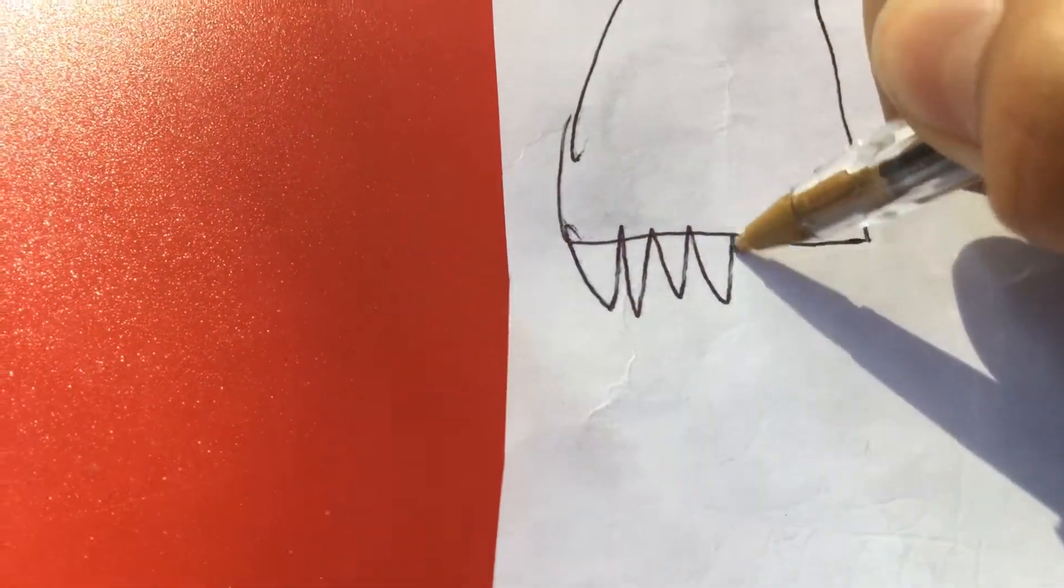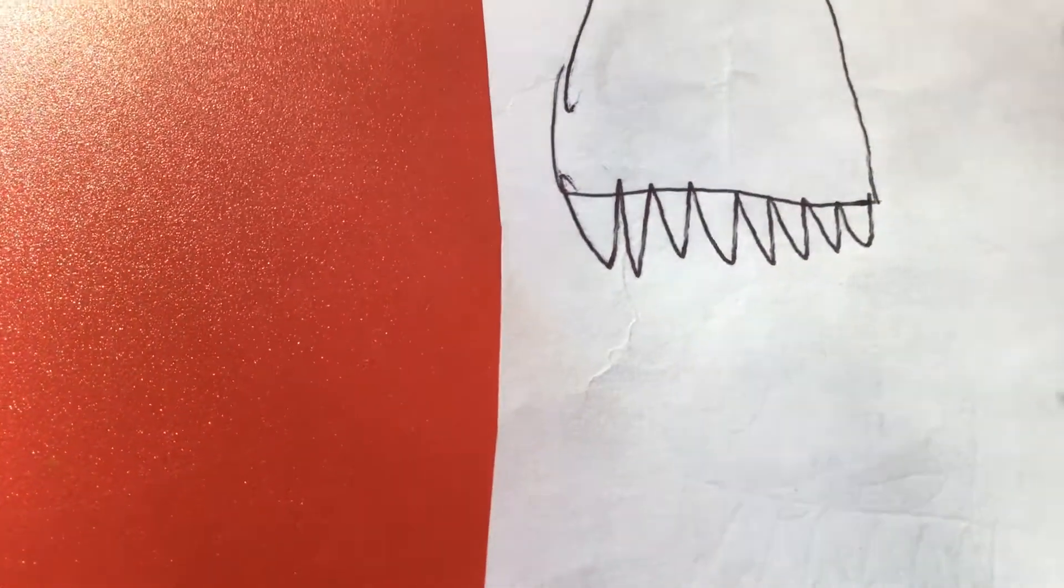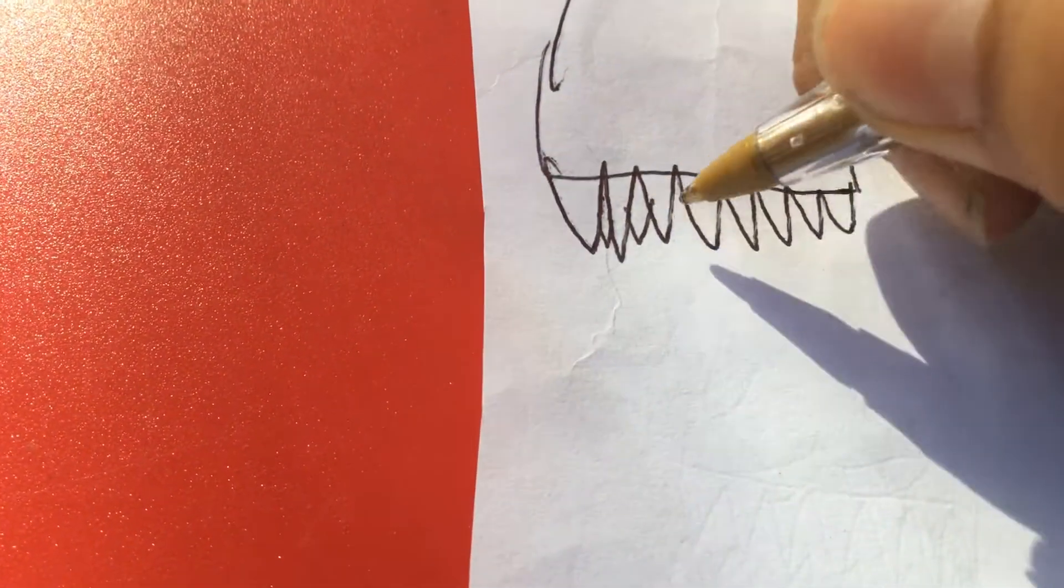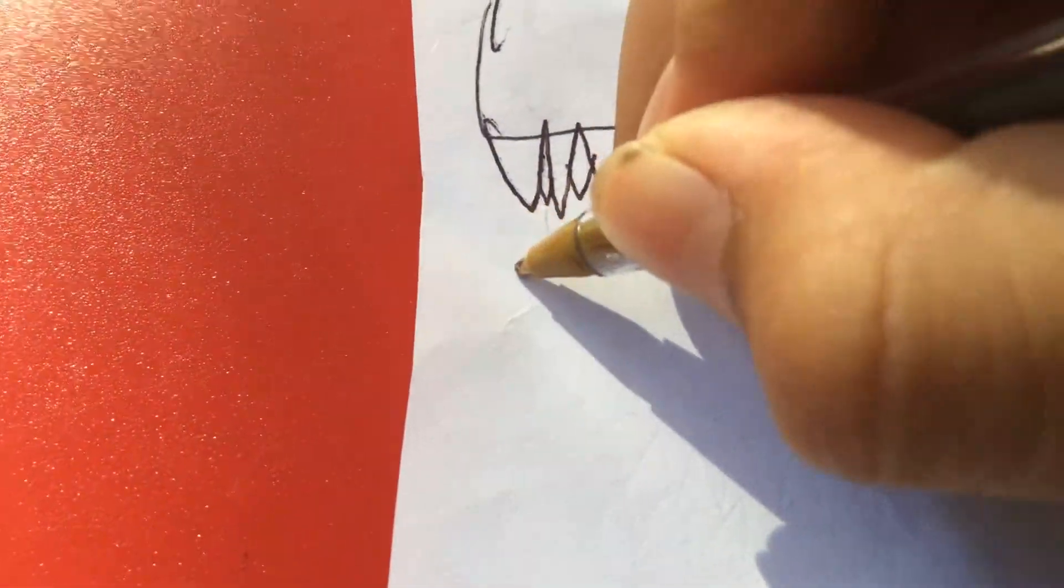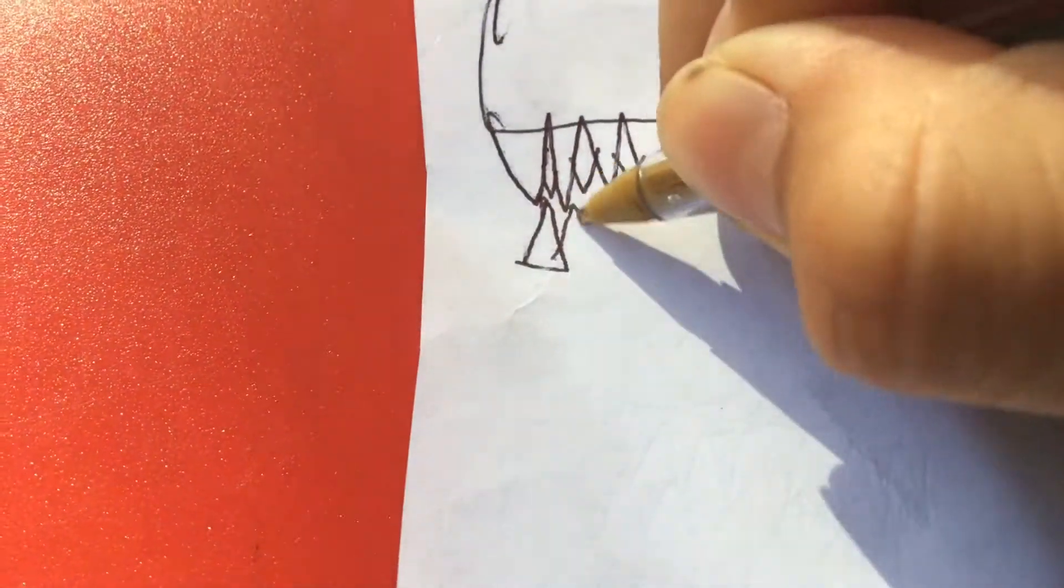Sharp teeth. Another teeth under a teeth. Now next, add another tooth.